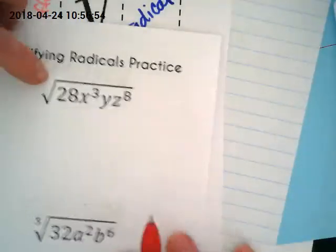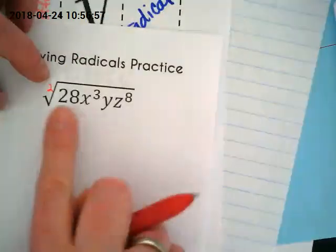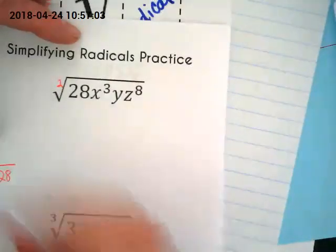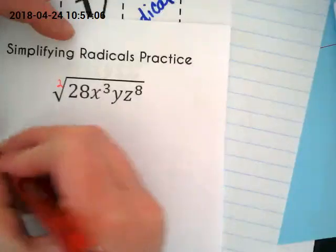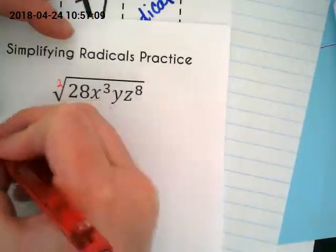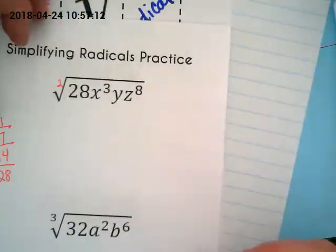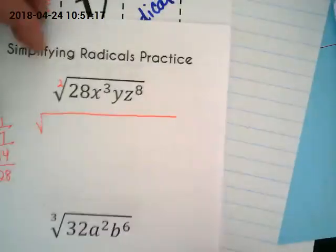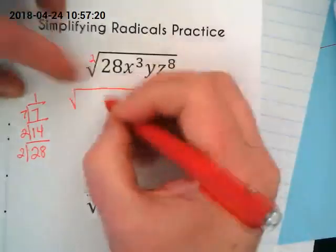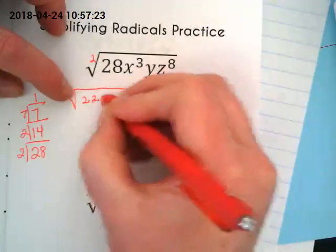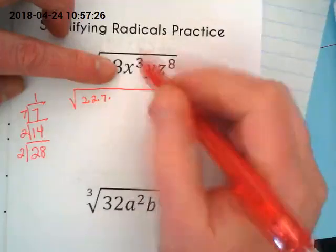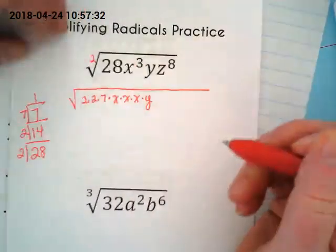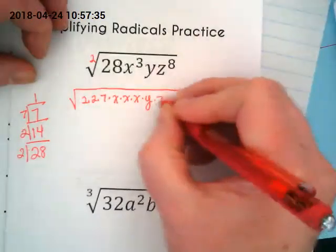There's nothing here, so this means it is a 2. I need to find the prime factors of 28. 2 and 14, 2 and 7, 7 and 1. I'm going to rewrite this, breaking out all of the factored parts of this. So the 28 is going to be rewritten as 2 times 2 times 7.